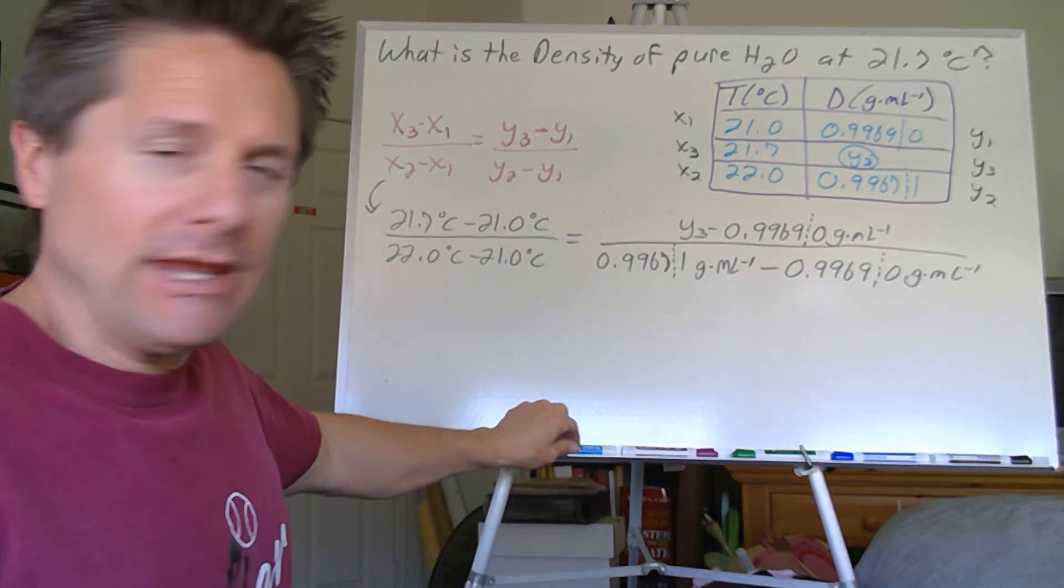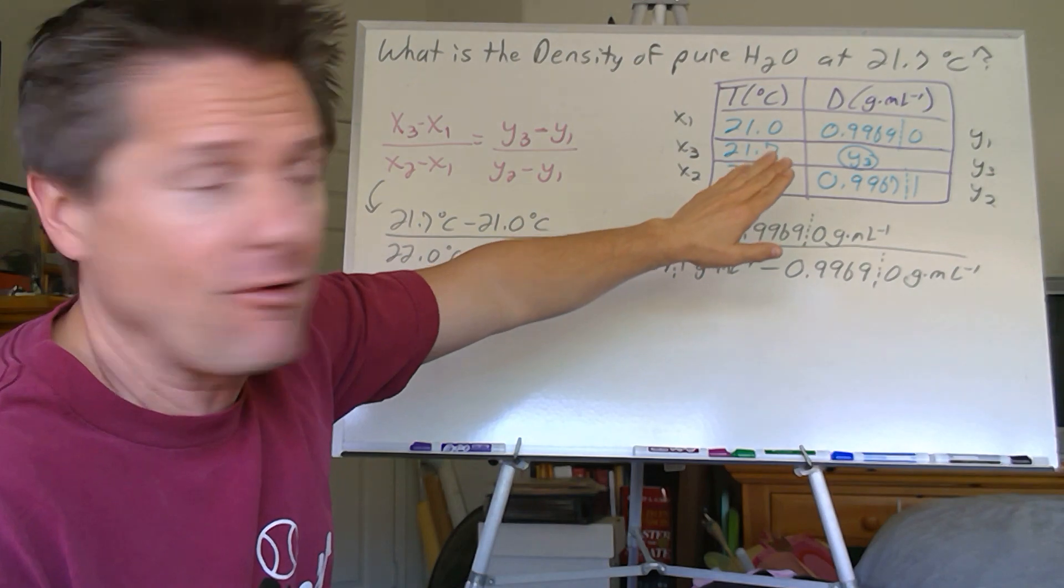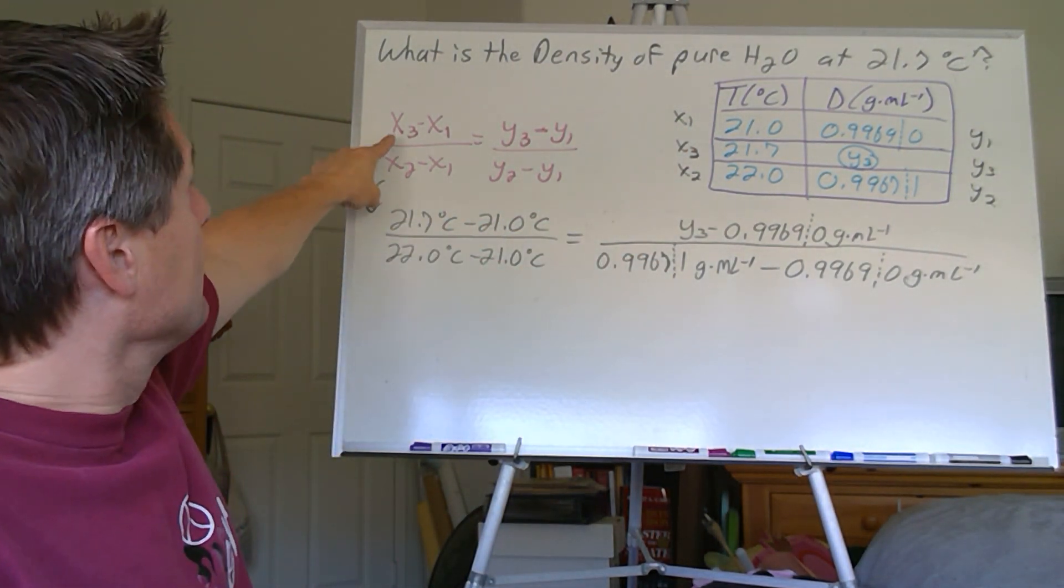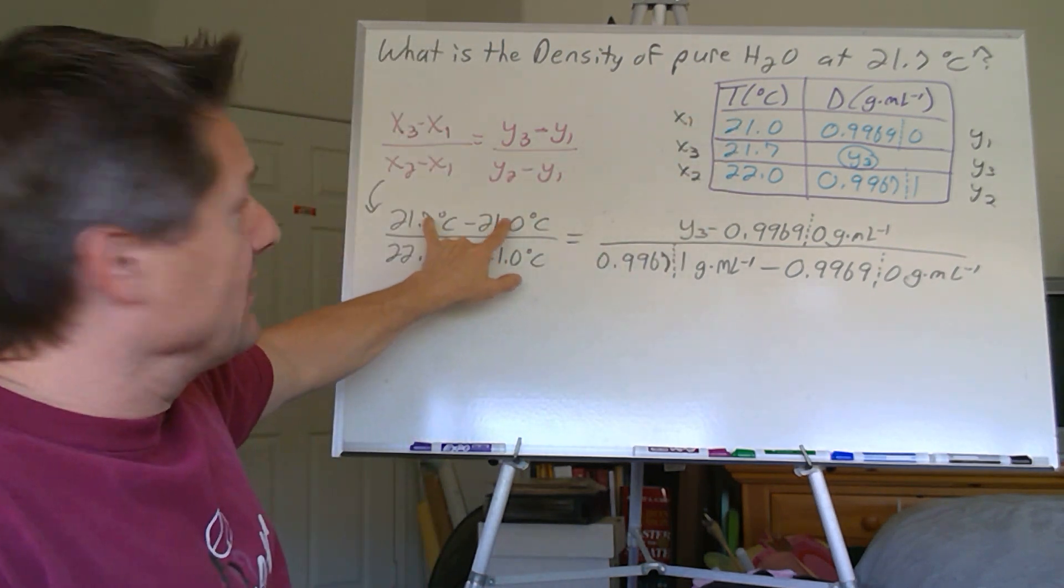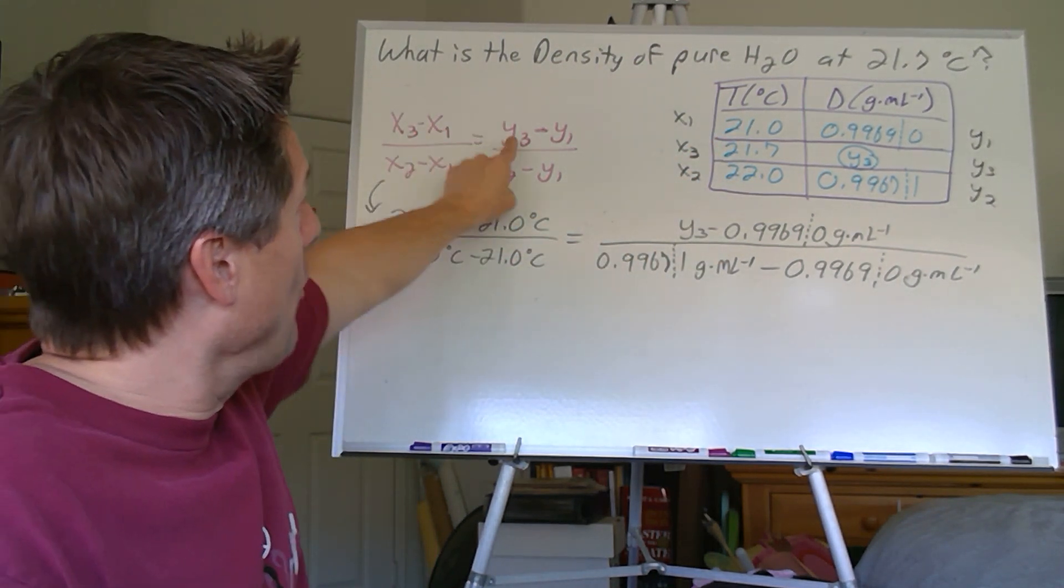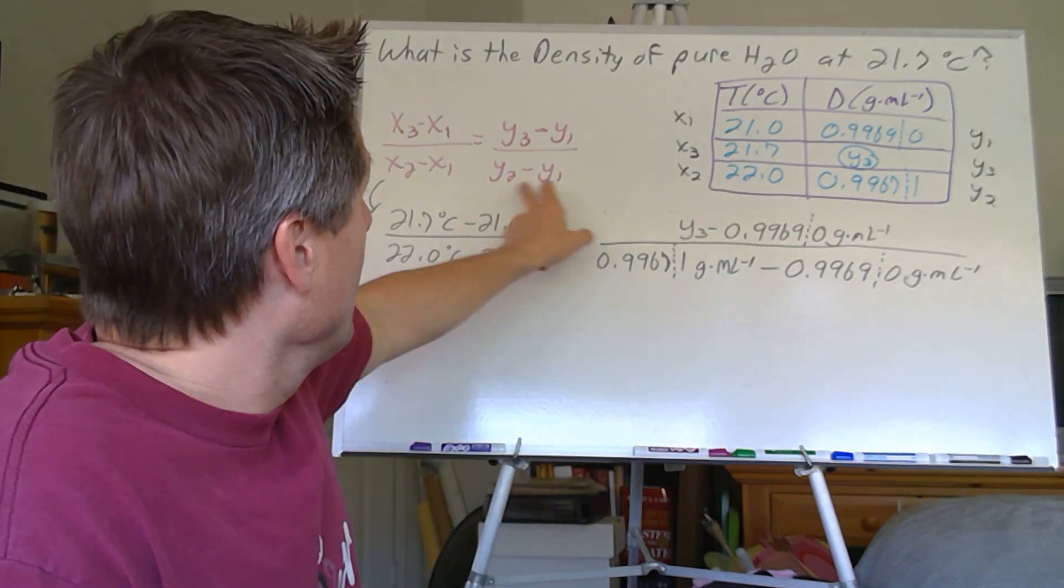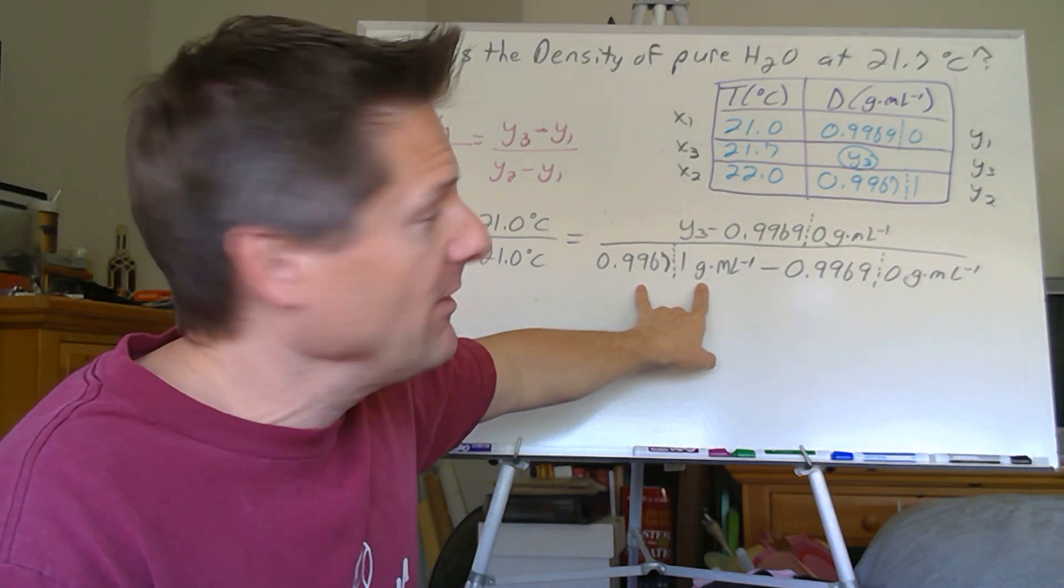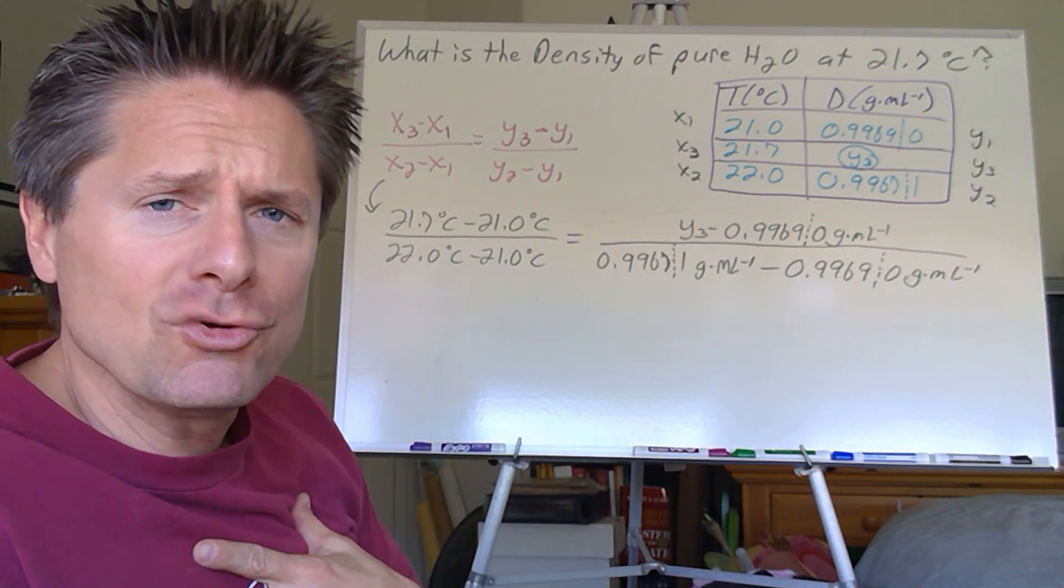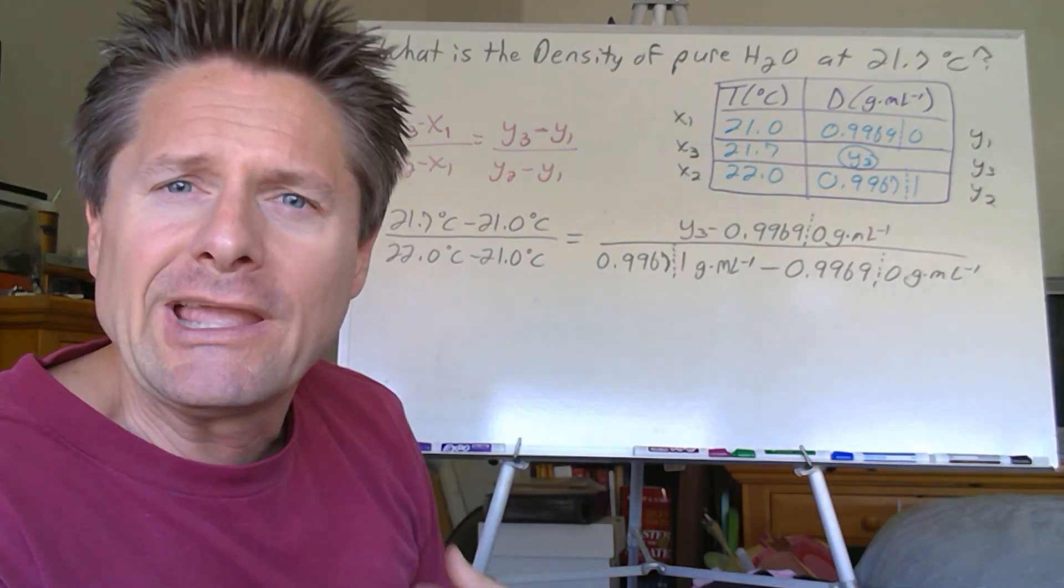Here we go, team! We can do this. So I rewrote the data table up there with our labels, and I rewrote the equation that we solved, or derived from that, right? So the part of x over the whole of x is equal to the part of y over the whole of y. Party over holey. So all I did is plugged in my data. So x3 is 21.7, x1 is 21.0, that's the part of x. And then x2 is 22.0, x1 is 21.0, that's the whole of x, right? So the part of y is y3, which I don't know, minus y1, 0.99690 grams per milliliter, good to four significant digits. And then y2 is 0.99671 grams per milliliter, good to four sig figs, minus y1, 0.99690 grams per milliliter, good to four sig figs. So we're just inserting our data in there.